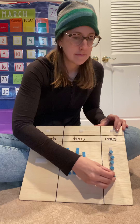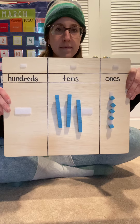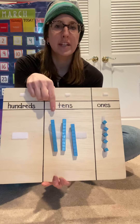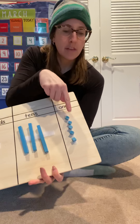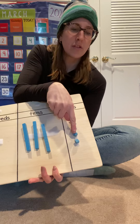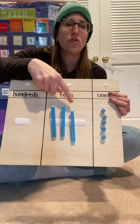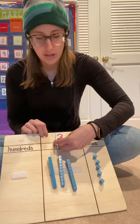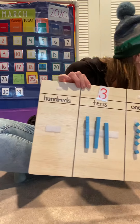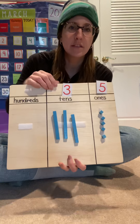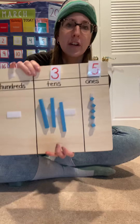I want you to tell me how many. Our ones are going to go here, under ones. Our tens are going to go under tens. And then if we use 100 today, it's going to go under hundreds. Ones, tens, and hundreds. I'm going to put some base 10 blocks together and I want you to see if you can figure out what number it is, okay?